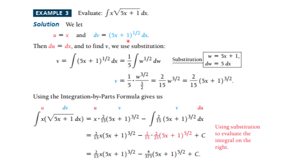We let w equal 5x + 1, which means dw is equal to 5 dx. We take v to be this integral with this substitution: add 1 to the exponent, divide by the new exponent, simplify, and then reverse the substitution to get v equal to 2/15 · (5x + 1)^(3/2).